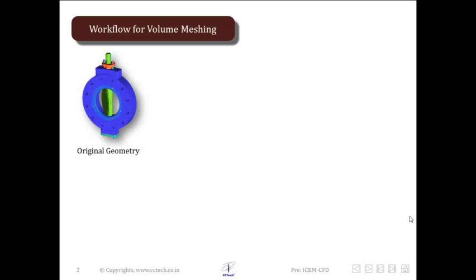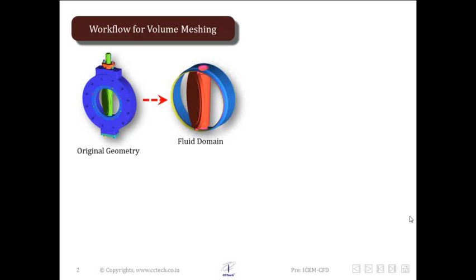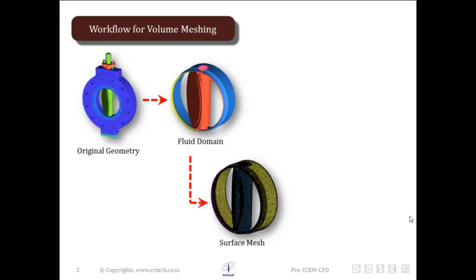Let's say we have an original geometry which is a CAD file or CAD model. From that, we extract the fluid domain — the volume within which we are going to perform CFD. Parts such as bolts, fixtures, and other solid CAD parts not to be included in the CFD domain will be cleaned up and excluded. So the first step is to extract the fluid domain from the original geometry.